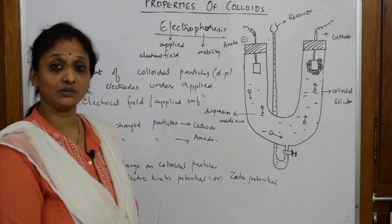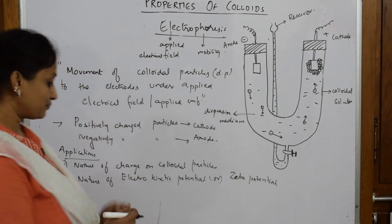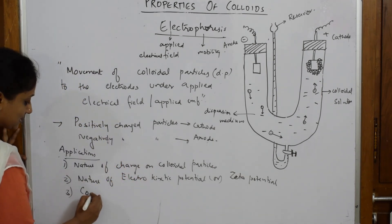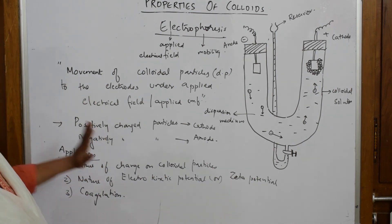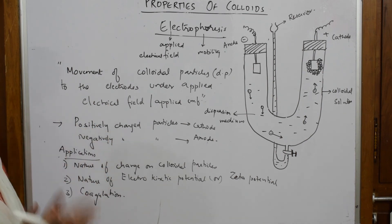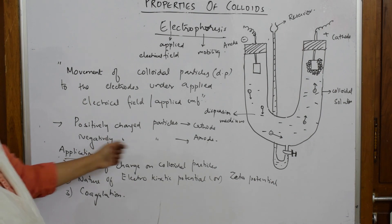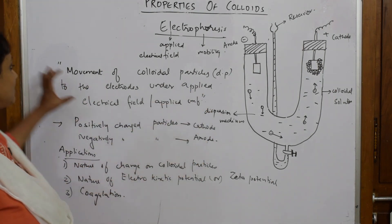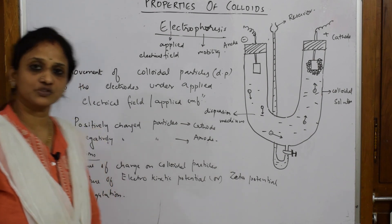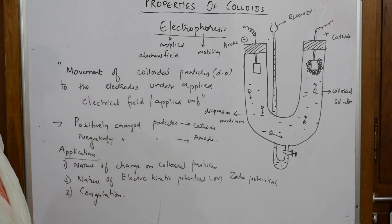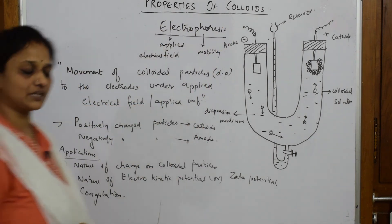It also explains me the concept of coagulation — I'll teach you what coagulation is shortly. So simple experiment: cation to cathode, anion to anode, and this movement under the applied electric field is called electrophoresis. In the exam, if you don't remember anything else, at least write this — you will get marks for that.